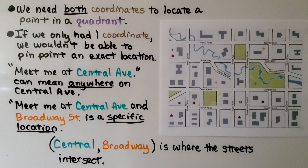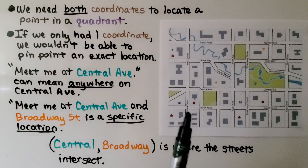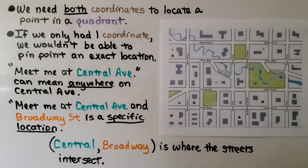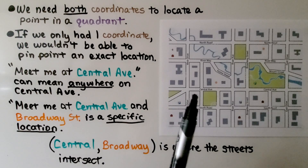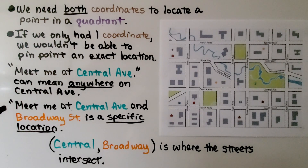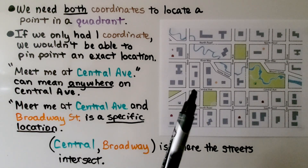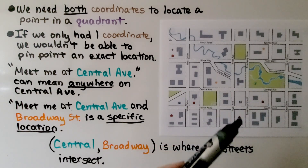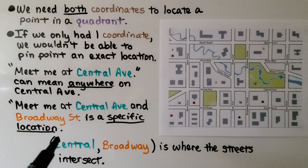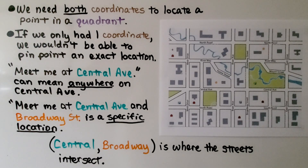We need both coordinates to locate a point in a quadrant. If we only had one coordinate, we wouldn't be able to pinpoint an exact location. Take a look at this map — here's Central Avenue. If someone said 'meet me at Central Avenue,' well, where? It could be anywhere on Central Avenue; we'd have no idea. But if someone said 'meet me at Central Avenue and Broadway Street,' now we know — here's Central Avenue and here's Broadway, so we know exactly where they want to meet. The ordered pair would be Central Avenue and Broadway — that's an exact location.